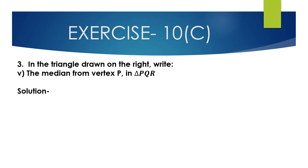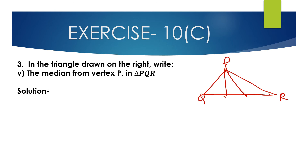Fifth bit: the median from vertex P in triangle PQR. Looking at the diagram with points P, Q, R, and S marked, the median from vertex P is PS. So PS is the median from vertex P in triangle PQR.